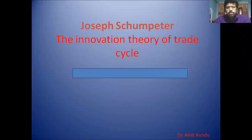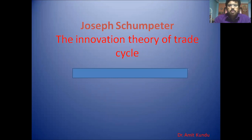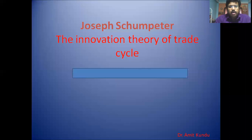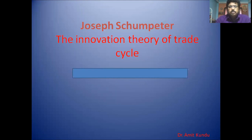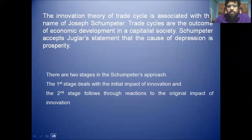Hello, today I will be discussing Schumpeter's theory of innovation. The innovation theory of the trade cycle is much more important than the business cycle. Schumpeter is an Austrian political economist, born in 1883, who after 1939 immigrated to the USA and took citizenship there. The innovation theory of the trade cycle is associated with the name of Joseph Schumpeter.